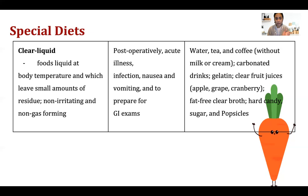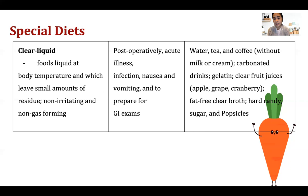Clear liquid diet is useful post-operatively, during acute illness, infection, nausea, vomiting, and to prepare for GI exams such as visualization of the sigmoid or colon. Sources of clear liquids include water, tea, coffee without milk, carbonated drinks, gelatin, clear fruit juices like apple, grape, and cranberry, fat-free clear broth, hard candy, and popsicles.